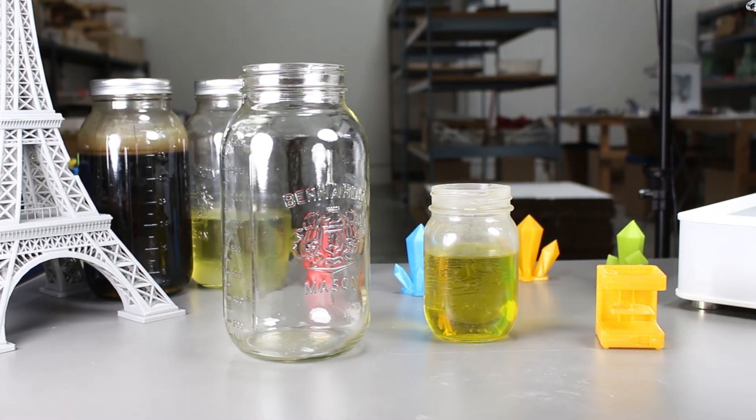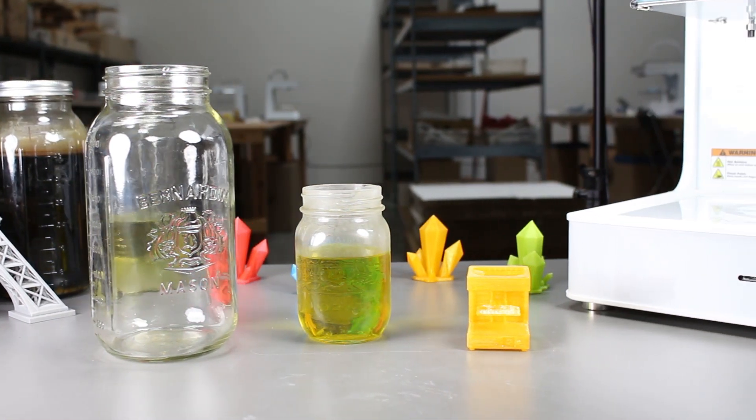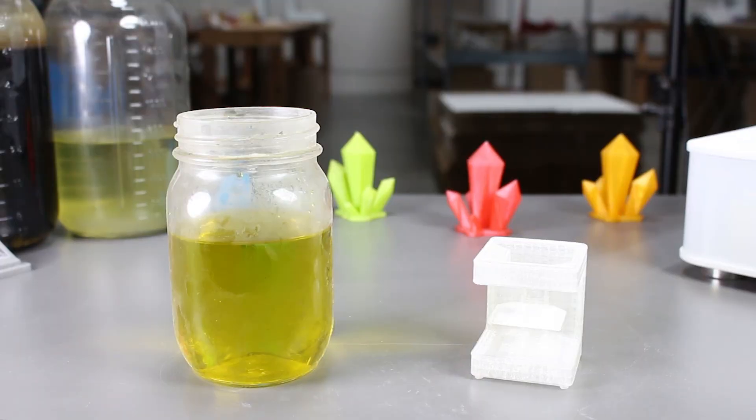Muriatic acid is essentially hydrochloric acid but in a less pure form. The muriatic acid here is diluted with water so it's a roughly 50 to 50 ratio. We'll drop the print in and see if it reacts right away or if it requires some time.